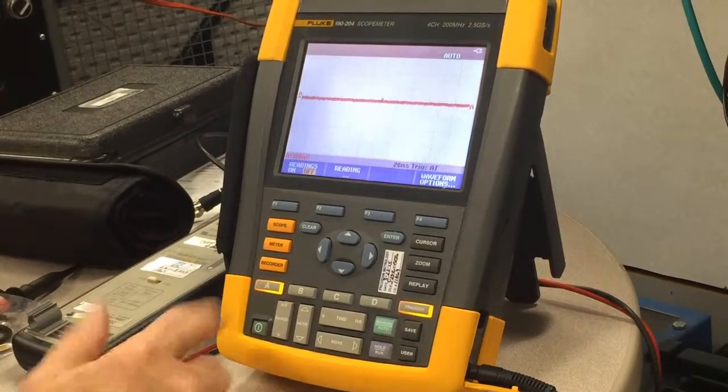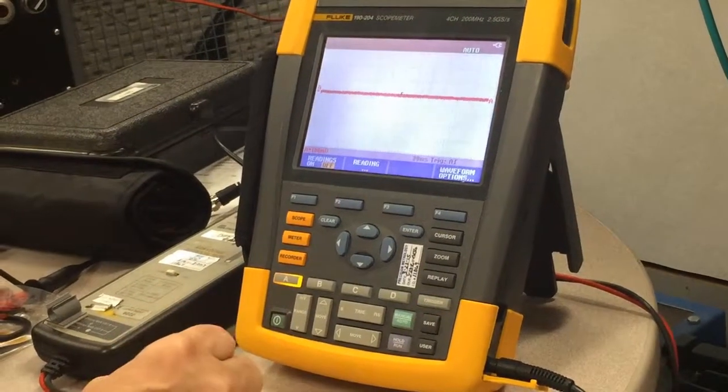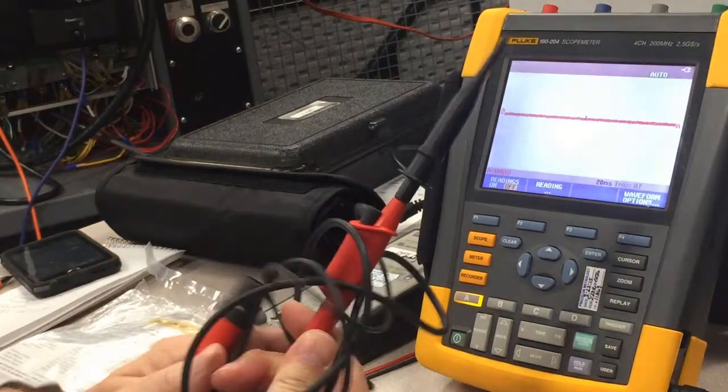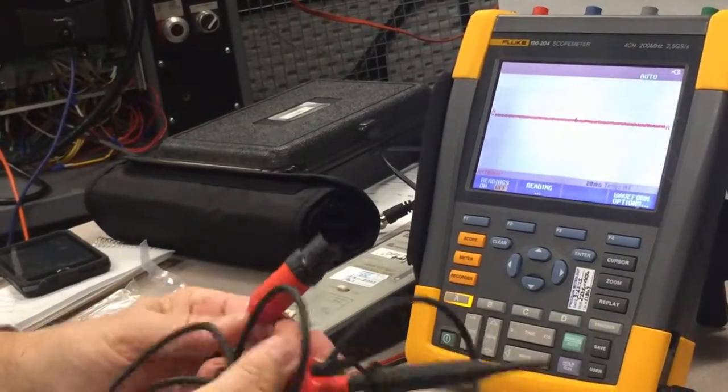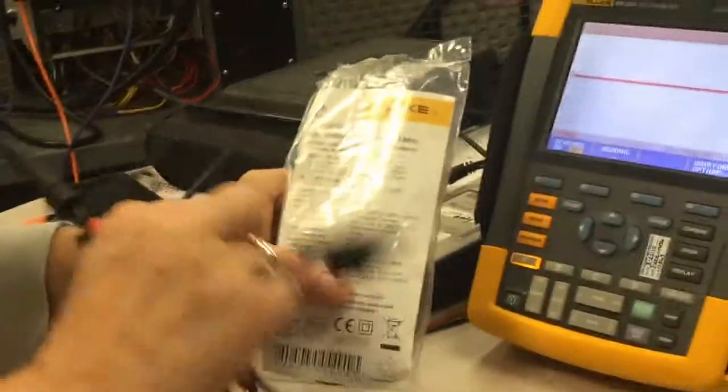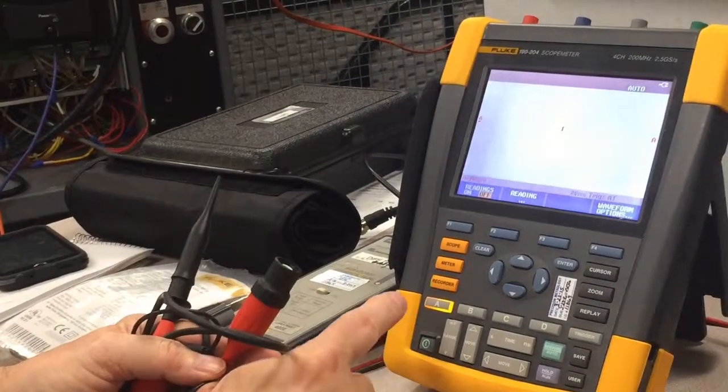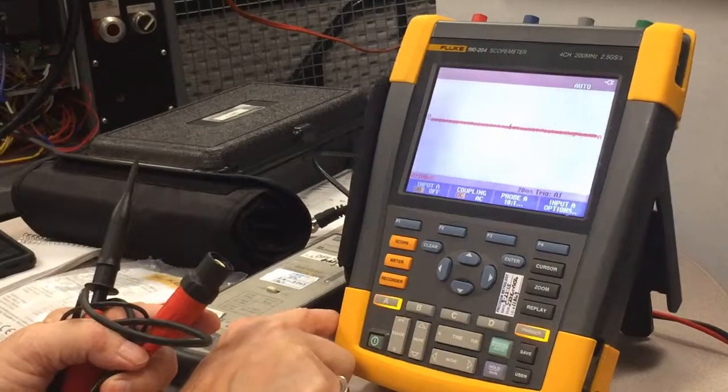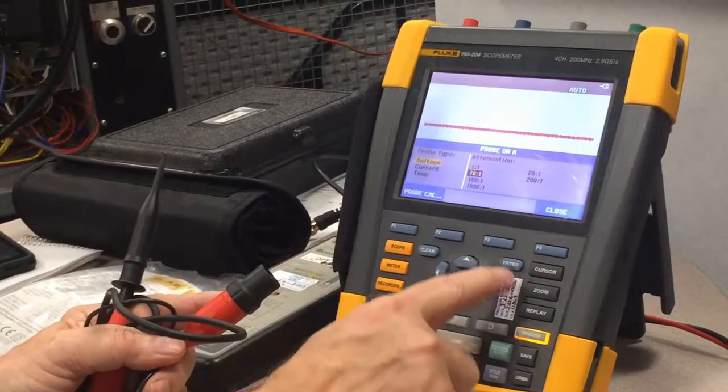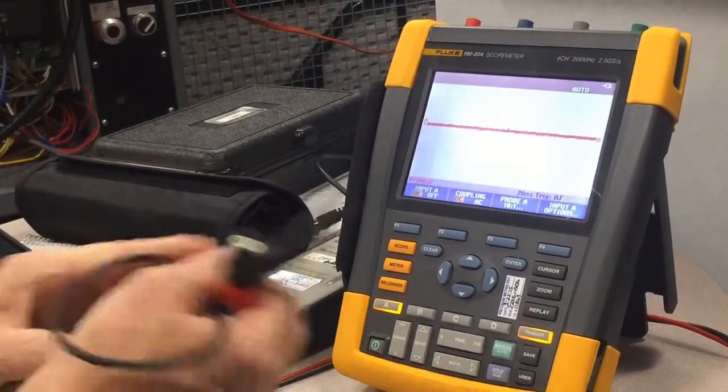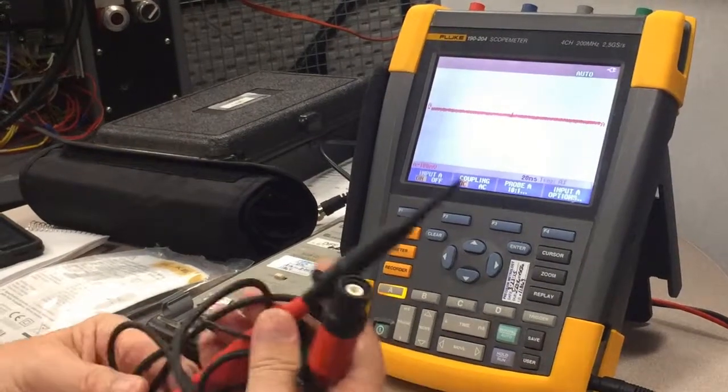The next thing you're going to do is set up for the voltage probe that you're using to measure the reflective wave voltage. The simple option is use the scope probe that comes with the Fluke scope meter. This scope probe has a 10 to 1 attenuation. So knowing that it's a 10 to 1 attenuation, and we're going to connect it to channel A, we press Channel A, and we go to the scope probe attenuation, and then we make sure it's set for 10 to 1, and then press Enter.